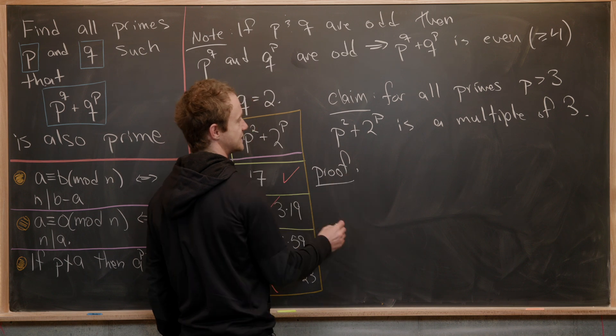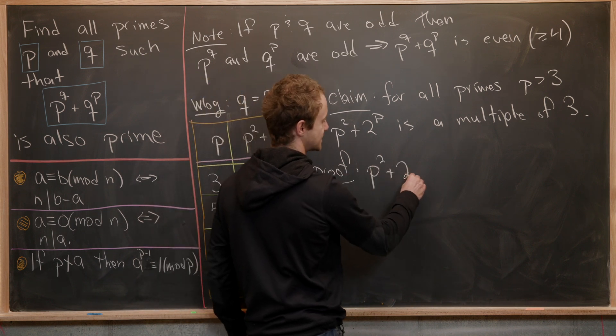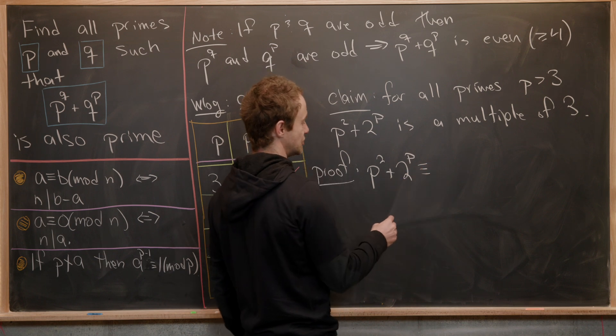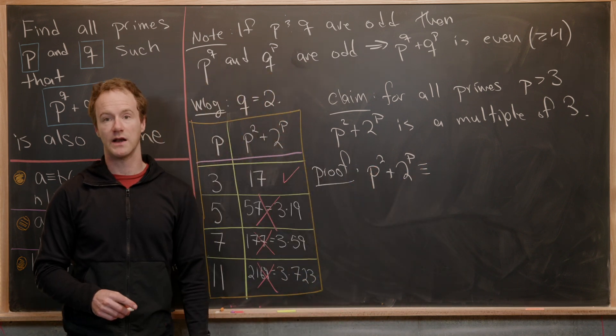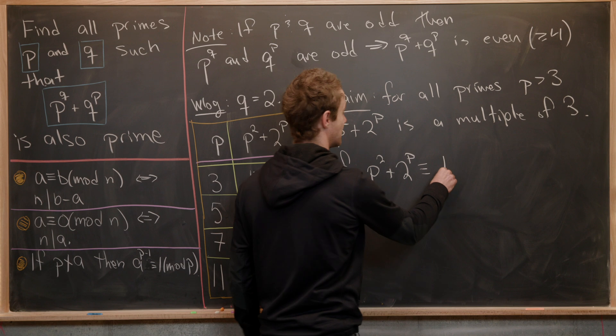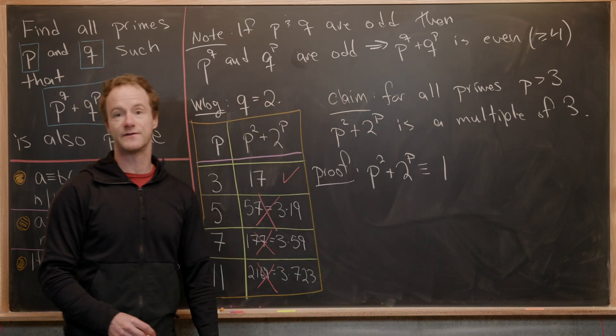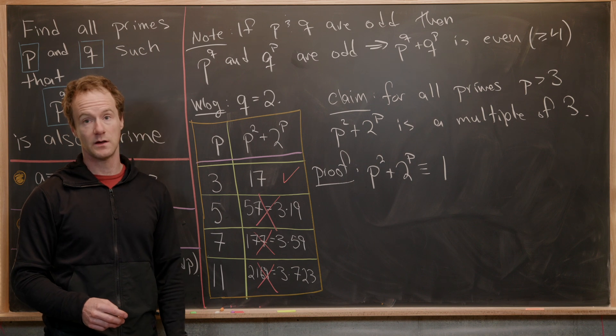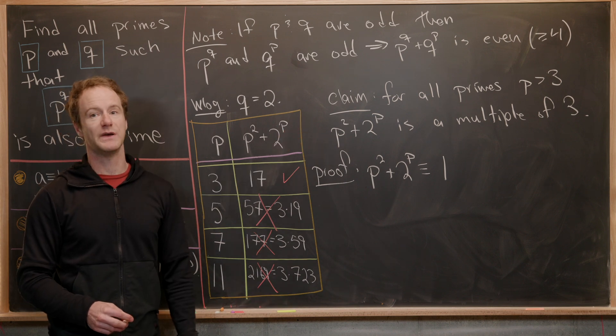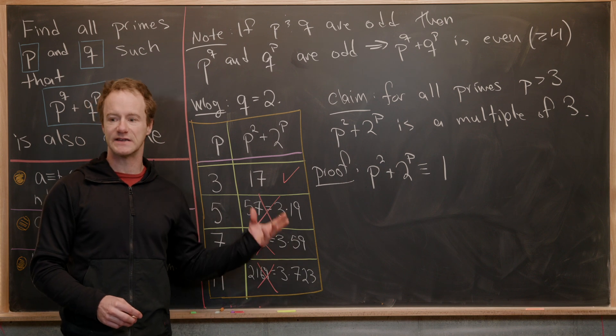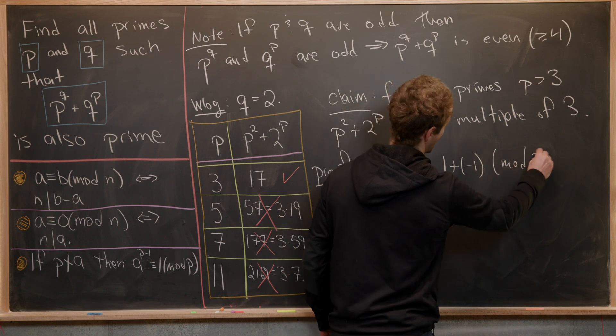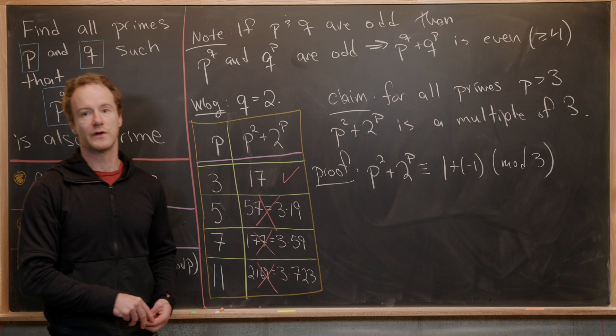So we're going to reduce this modulo three. We've got p squared plus two to the p reducing mod three, we get that this is going to be equal to, well, p squared mod three is the same thing as p to the three minus one mod p, so that's just the number one. And then we can think of two as being negative one modulo three. But since p is an odd number, because it's a prime bigger than three, we know that two to the p is the same thing as negative one to an odd number, which is negative one mod three, I should say. So let's go ahead and point out where those things come from.